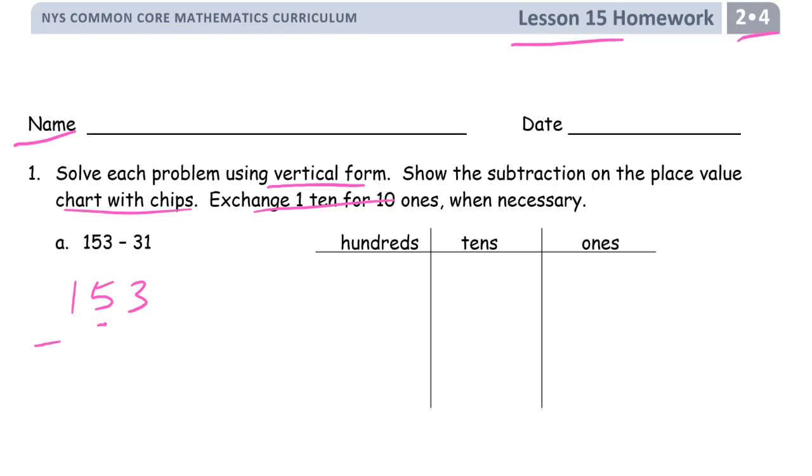153 minus 31. And we have enough ones. So 3 minus 1, that's 2. 5 minus 3, that's 2. And we still have the 100 left.